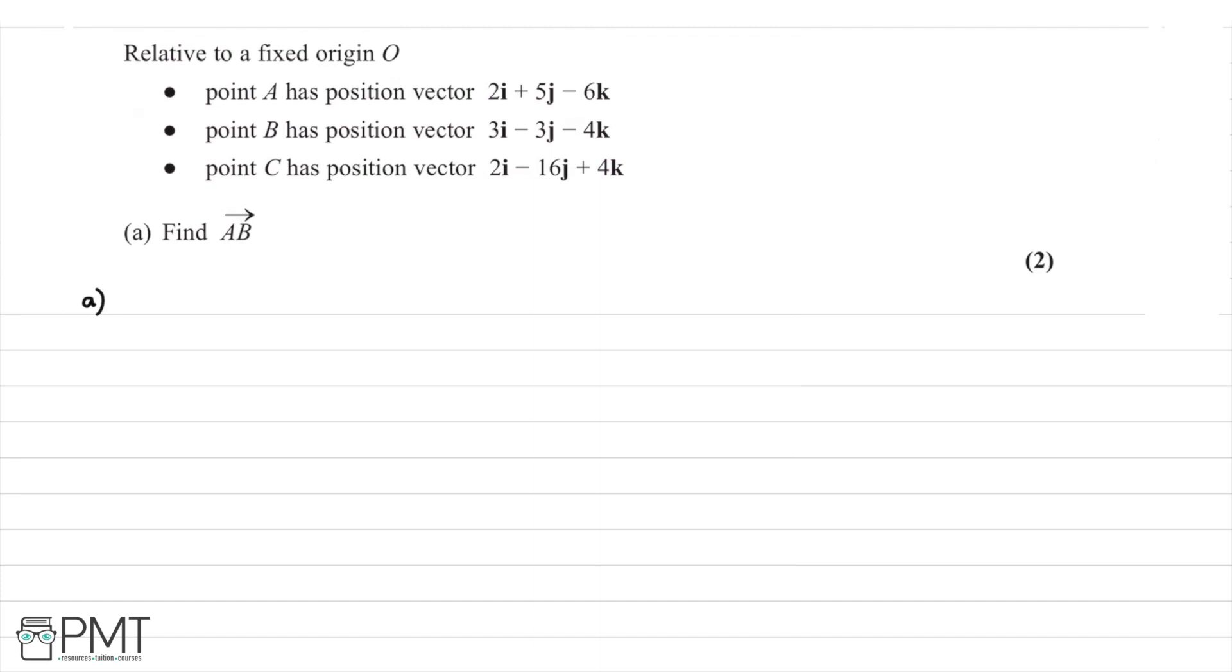For two marks, we're asked to find AB. We begin by noting that AB is found by doing position vector B and subtracting position vector A. We'll write this in column vector form.